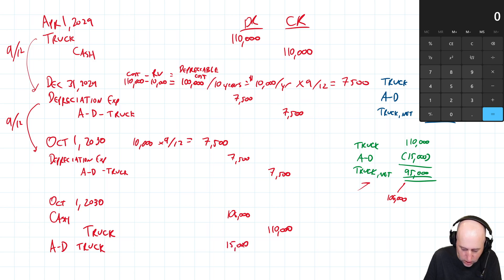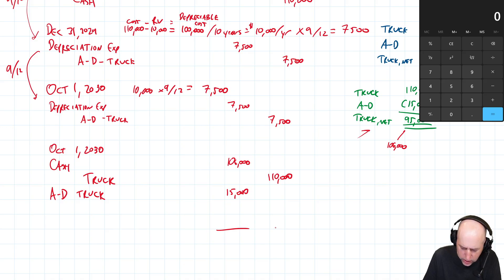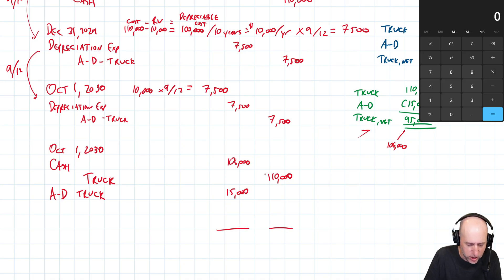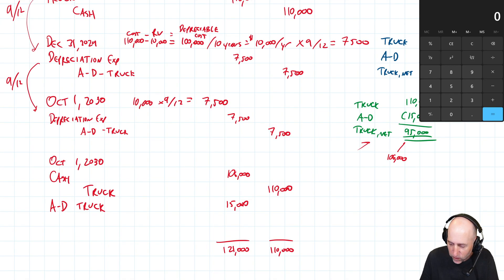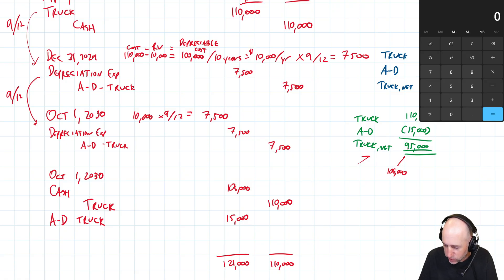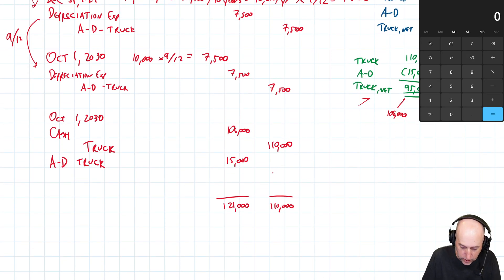What you find is it doesn't balance. We took the cash in, we got rid of the truck and its accumulated depreciation, and this thing has $121,000 of debits, $110,000 of credits. We're off by $11,000 of credits. That $11,000 is just this difference, $106,000 to $95,000, it's $11,000. It's a credit that we need to fill in here. This credit is to an account we call Gain on Sale.